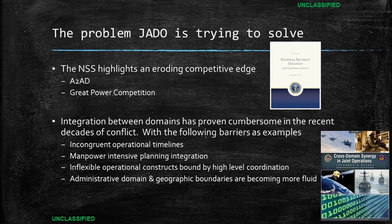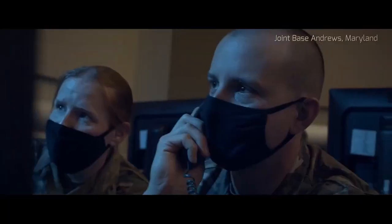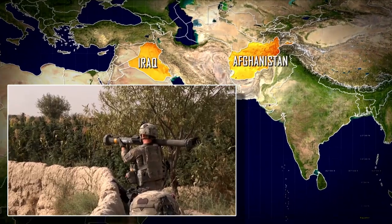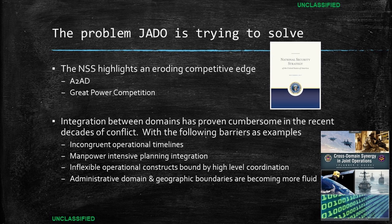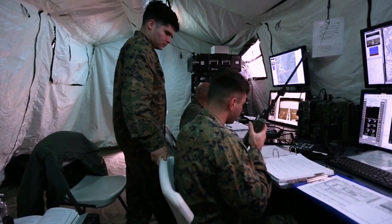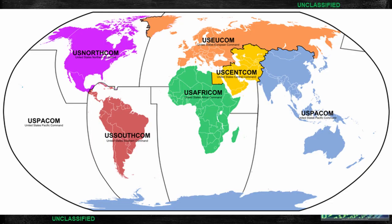Ultimately, JADO is trying to present a solution to some of the issues identified by the National Security Strategy with respect to the erosion of our national competitive edge. Our adversaries have made asymmetric investments in A2AD complexes, which have challenged our ability to operate with impunity. With the return of great power competition, we have gained greater awareness of the challenges that lie ahead. The preceding 20 years of low-intensity conflict have led to an appreciation of the challenges we face in integrating capabilities across domains and across government due to factors such as operational timeline, manpower-intensive planning, inflexible operational constructs bound by high-level coordination, and artificialities associated with administrative boundaries — geographic, service, domain, or U.S. code title.